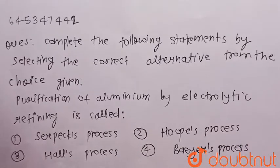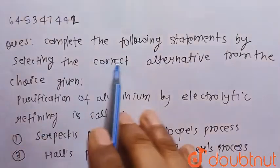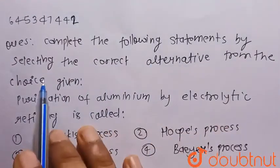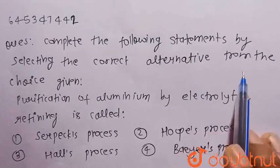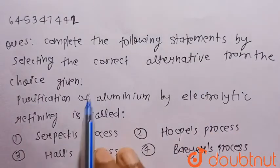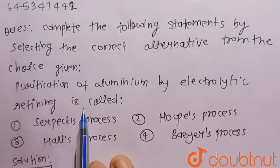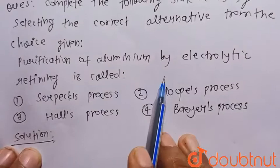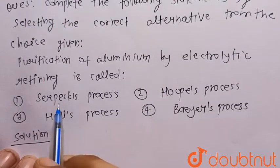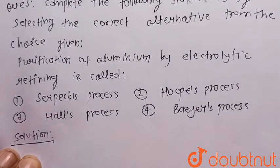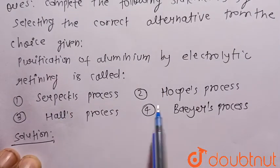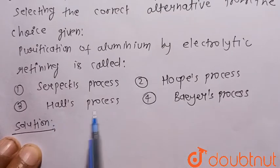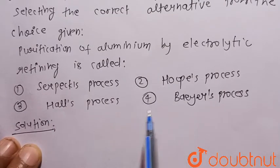Hello everyone, consider the given question. Complete the following statement by selecting the correct alternative from the choices given: Purification of aluminium by electrolytic refining is called? The four options are: first, Serpex process; second, Hoops process; third, Hall process; and fourth, Bayer process.